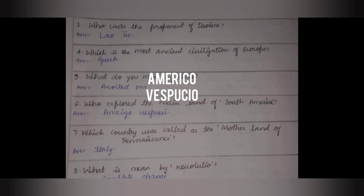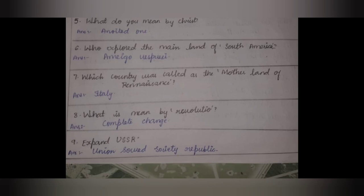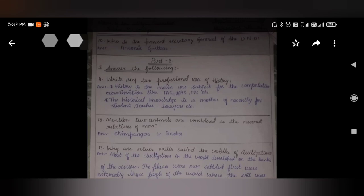Which country was called as the motherland of Renaissance? It is Italy. What is meant by revolution? A complete change. Expand USSR: Union of Soviet Socialist Republics. The 10th question is: who is the present secretary general of UNO? It is Antonio Guterres.